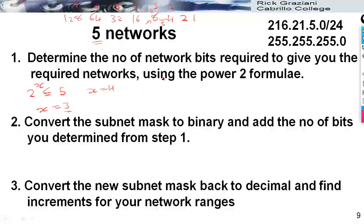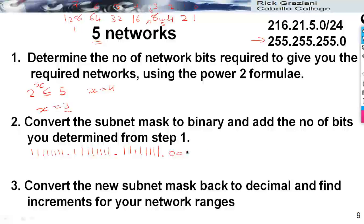Step two: convert the given subnet mask into binary. For a slash 24, you have 24 ones: 11111111.11111111.11111111.00000000. Two fifty-five converts to all ones, and zero in binary is all zeros. So we have our binary representation of 255.255.255.0.